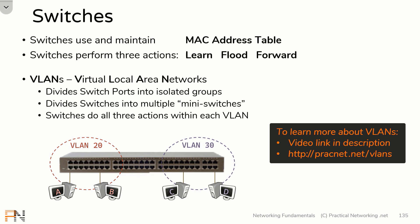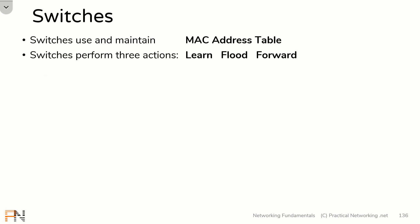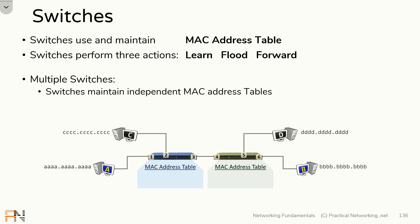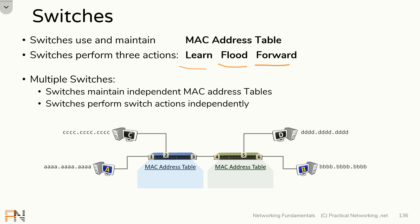We're going to continue and discuss how switches operate when there are multiple switches involved. To illustrate this we're going to use this topology. Both of these switches are going to maintain their own independent MAC address table — they're not going to share information with each other. They're simply both going to perform these three actions and populate their own independent MAC address table. I'm going to show you how that works by showing everything that occurs for a frame to go from host A to host B.